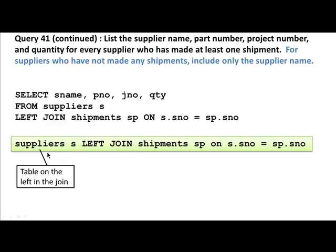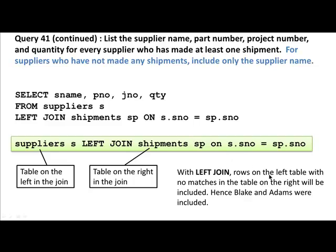Looking at the two tables — suppliers and shipments — suppliers is the table on the left in the join, and shipments is the table on the right. When we say LEFT JOIN, what we are saying is: get me all the matches as in a regular inner join. But if there are no matches for anything on the left table, whether there are matches or not, include everything from the left-hand side. If there are no matches, leave the other fields null. Everything on the left-hand side should appear in the output. That is what a left join is. Rows on the left table with no matches in the right table will still be included, and those with matches will definitely be included. So it is an inner join plus some more — that is what a left outer join is.